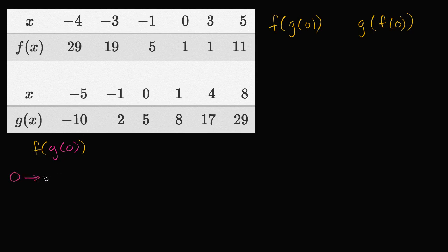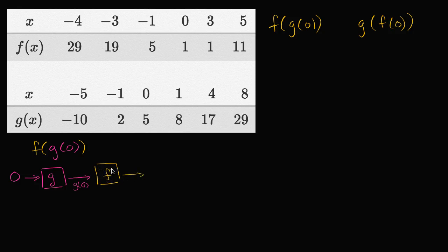We're going to input zero into our function g, and whatever we output is going to be g of zero. Then we're going to input that into our function f. And whatever we output then is going to be f of g of zero.